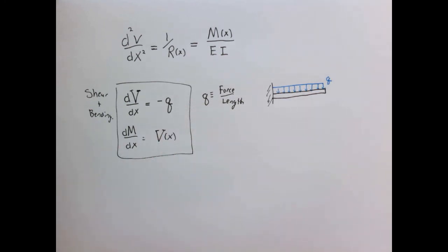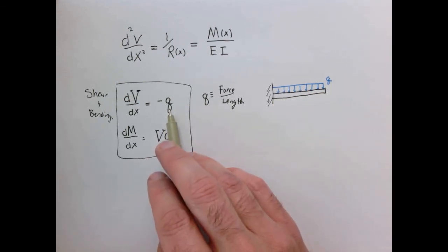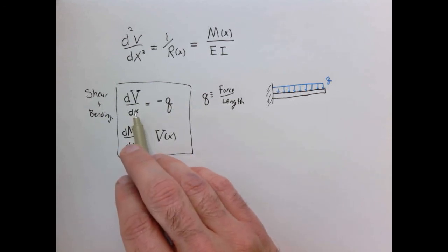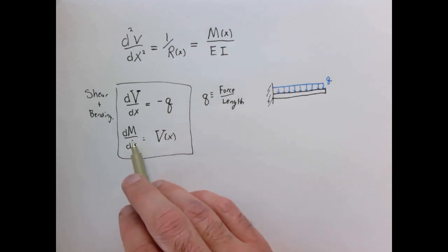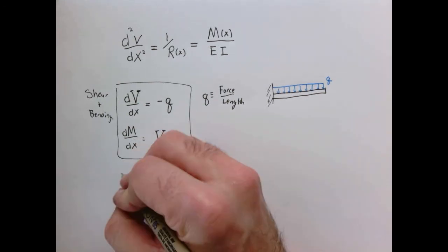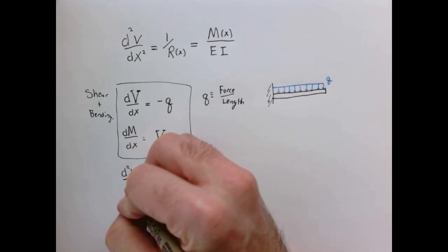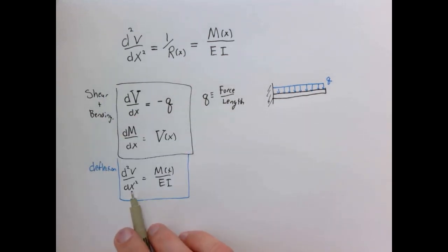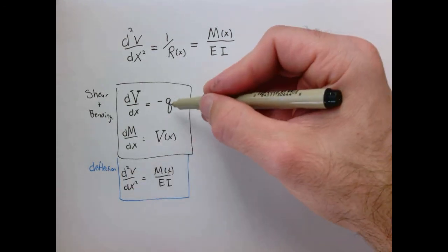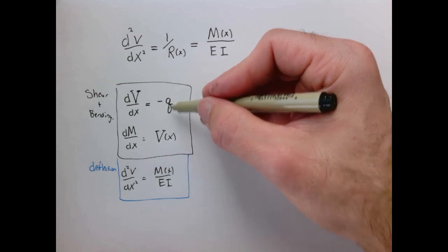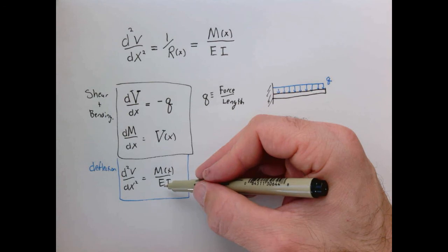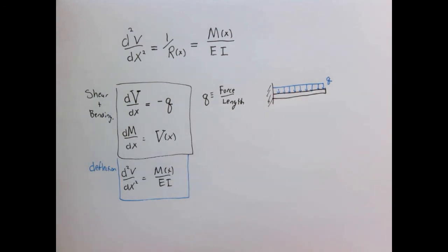We take our known loads q — either a distributed load or zero between point loads — and integrate to compute shear V(x). Then we integrate the shear to find the moment M(x). Finally, we use our deflection equation and integrate twice to get v(x), the deflection as a function of x. This procedure — integrating from loading to moment, then integrating twice to get deflection — works under the approximation that deflections are relatively small.